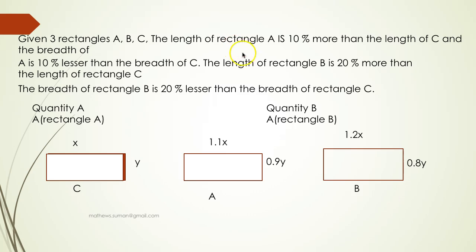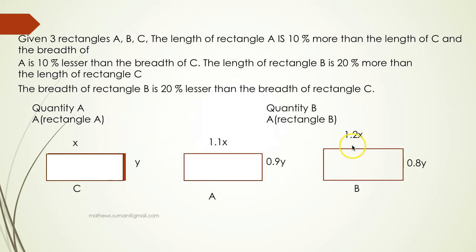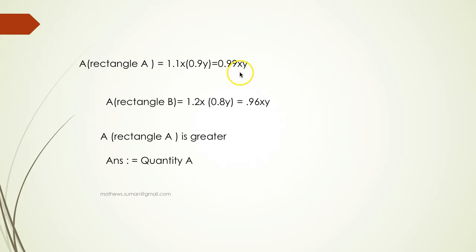If the length of C is x and breadth is y, then the length of A is 1.1x and breadth of A is 0.9y. The length of B is 1.2x and the breadth of B is 0.8y. So the area of rectangle A would be 1.1x into 0.9y, that is 0.99xy.